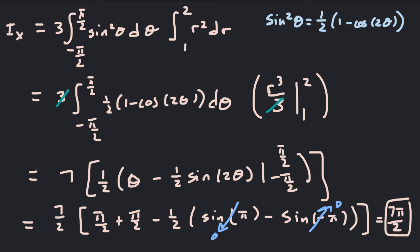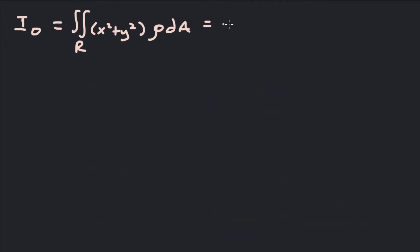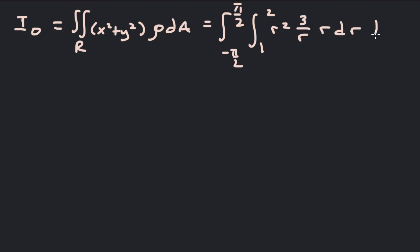Now let's look at the moment of inertia about the origin. This equals the integral from −π/2 to π/2, integral from 1 to 2. Since x² + y² = r², this becomes r² times (3/r) times r dr dθ. The r in 3/r cancels with one factor of r from dA, leaving 3r² dr dθ.